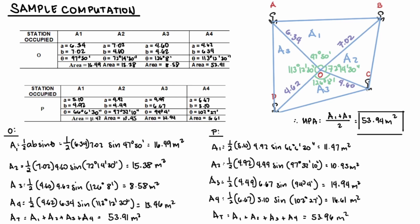Repeat the computations for the data gathered when the theodolite is at point P. So doing all that, you'll get the total area as 53.96 meters squared.